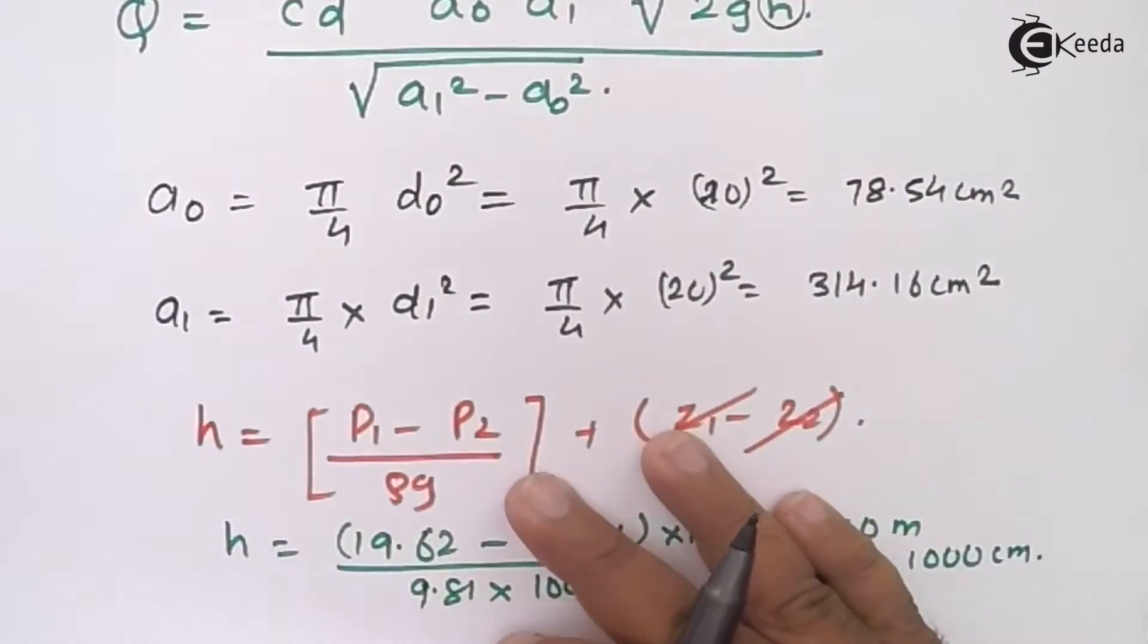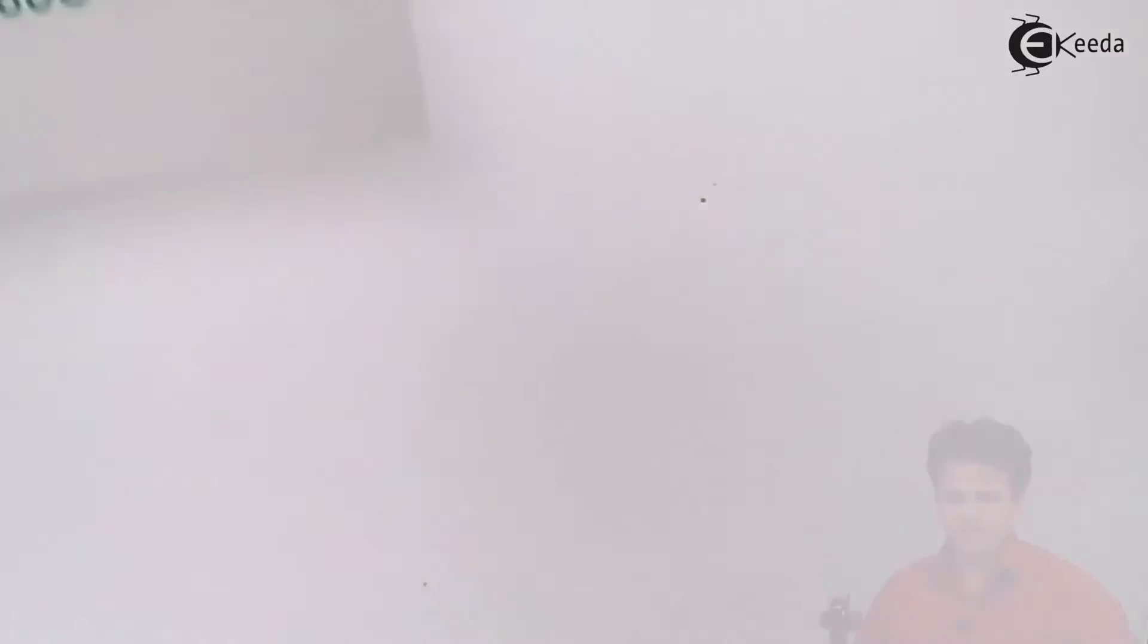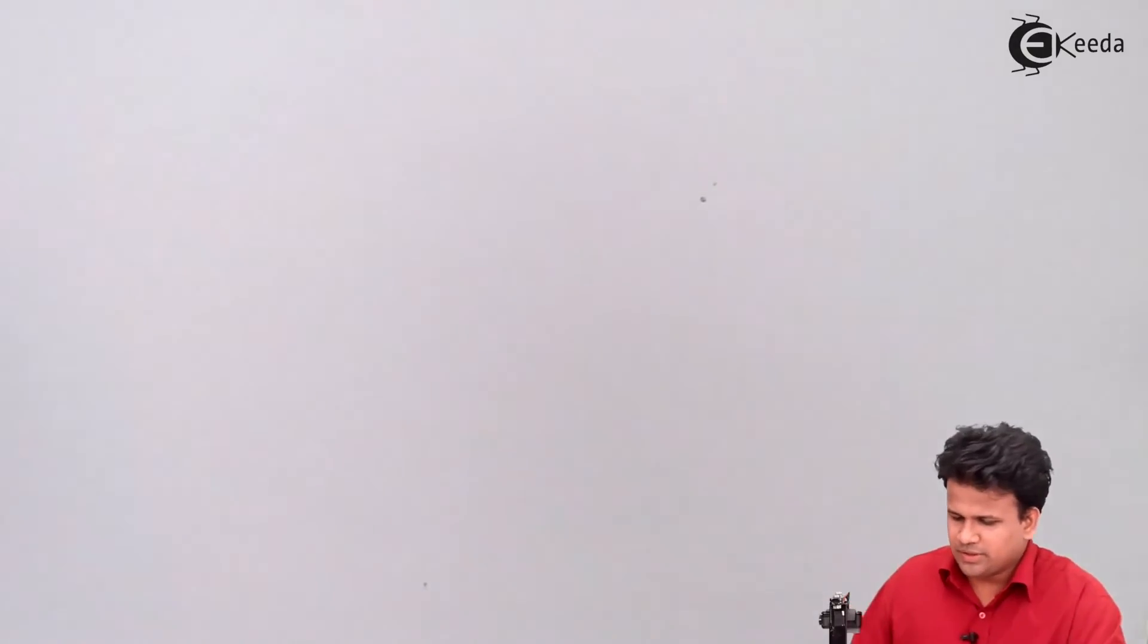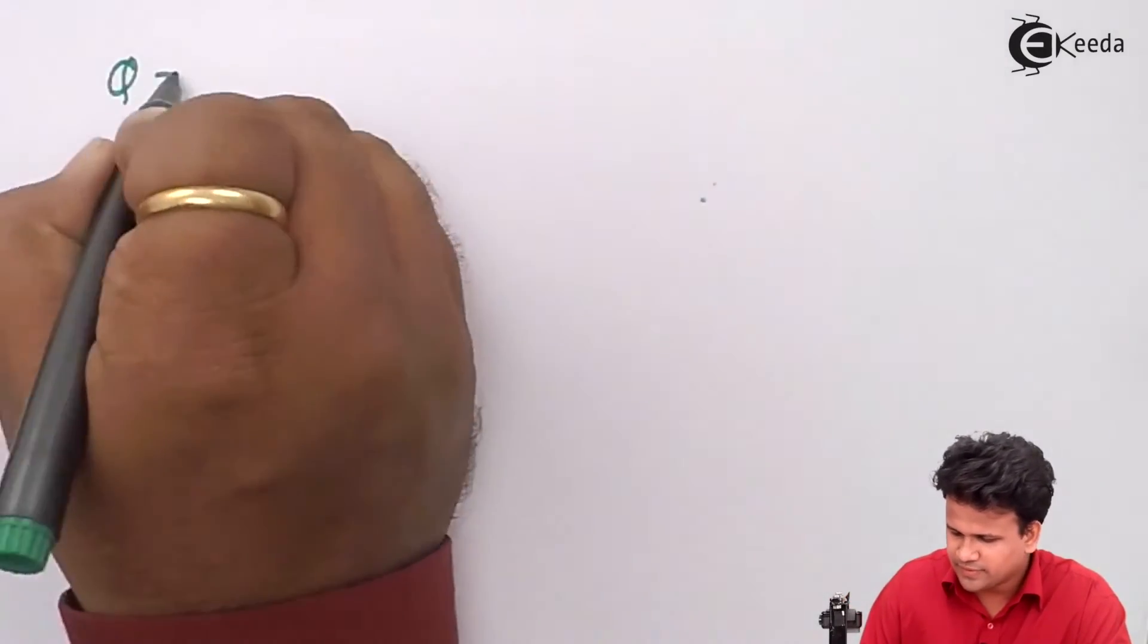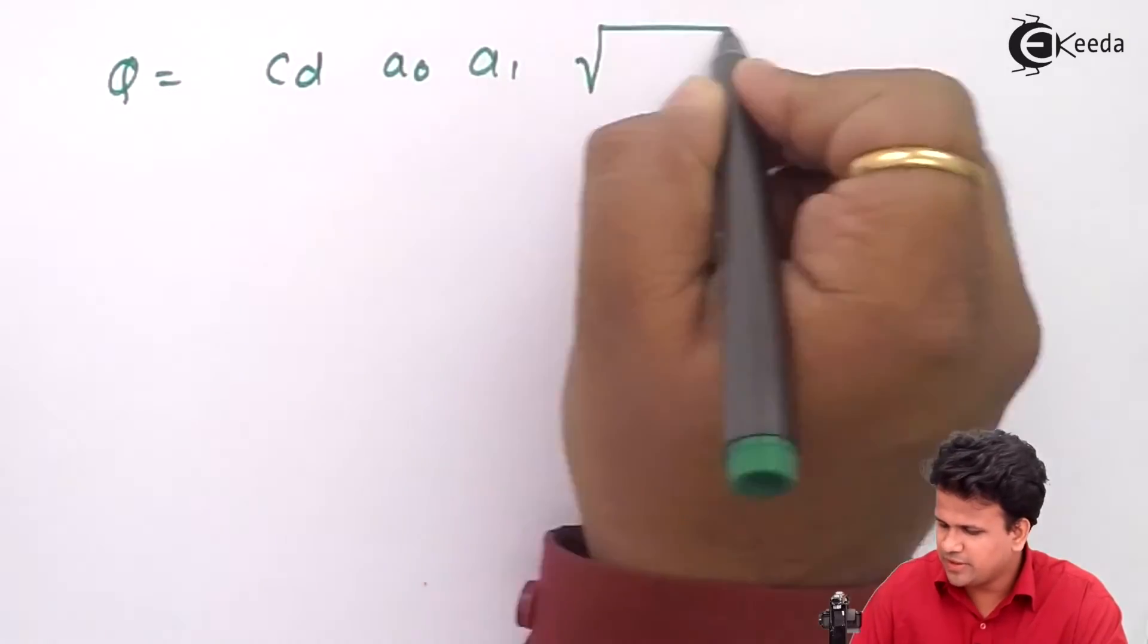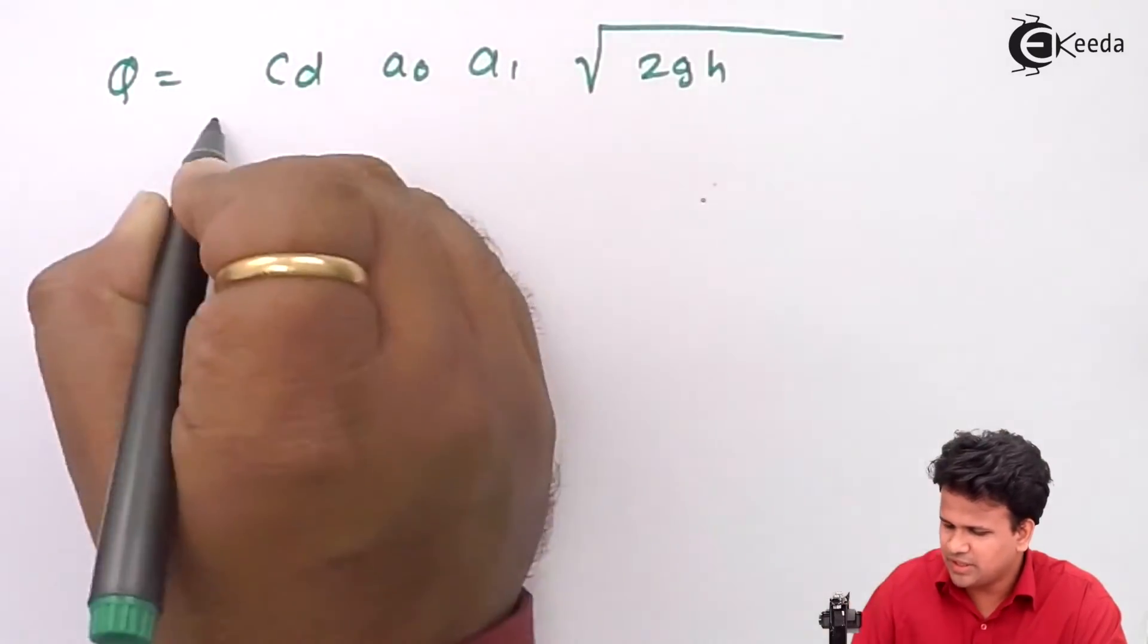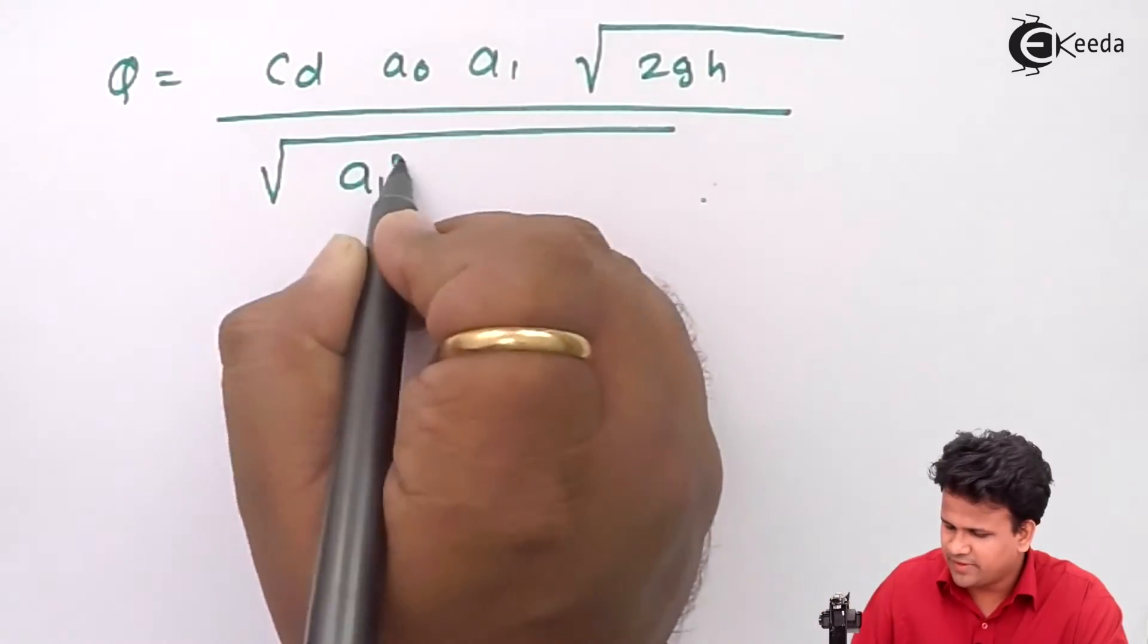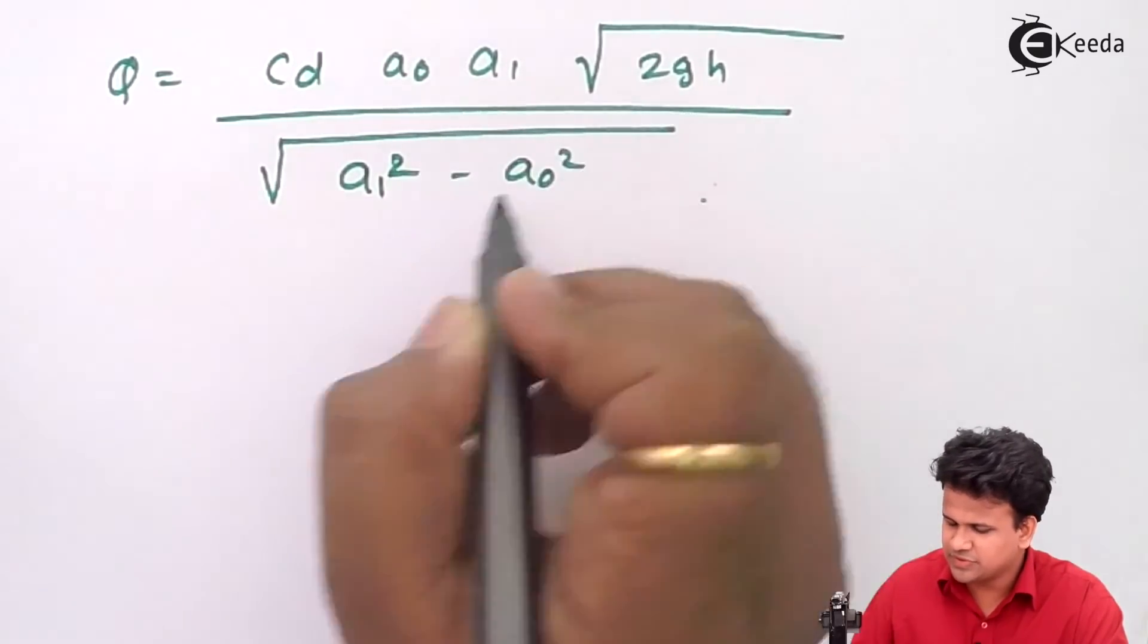Now let us substitute this in the formula and evaluate the answer. Q equals cd into a0 a1 square root of 2gh upon square root of a1 square minus a0 square.